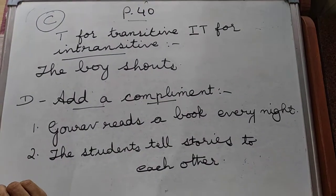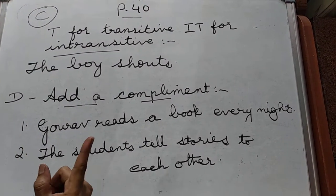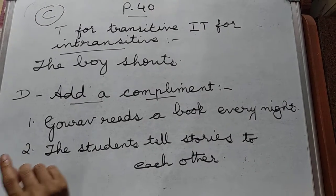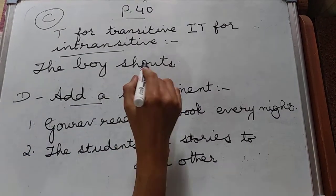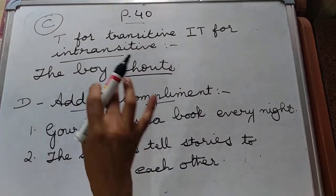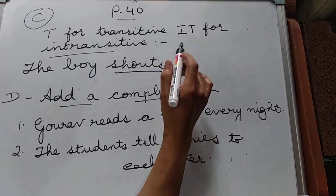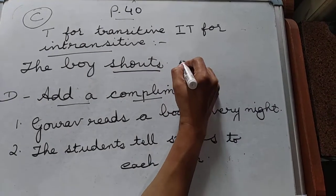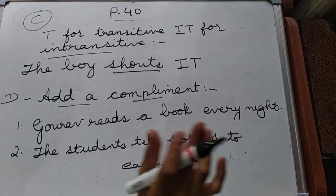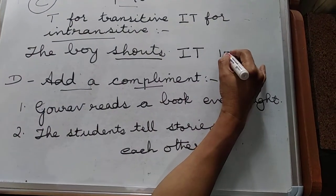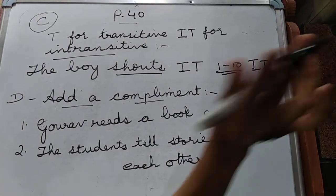Now, in your grammar book page 40, Exercise C: write T for transitive and IT for intransitive verb. Example: the boy shouts — 'boy' is the noun, 'shouts' is the verb, and there is no object, so this is an intransitive verb. In this exercise, all sentences from 1 to 10 are intransitive verbs.